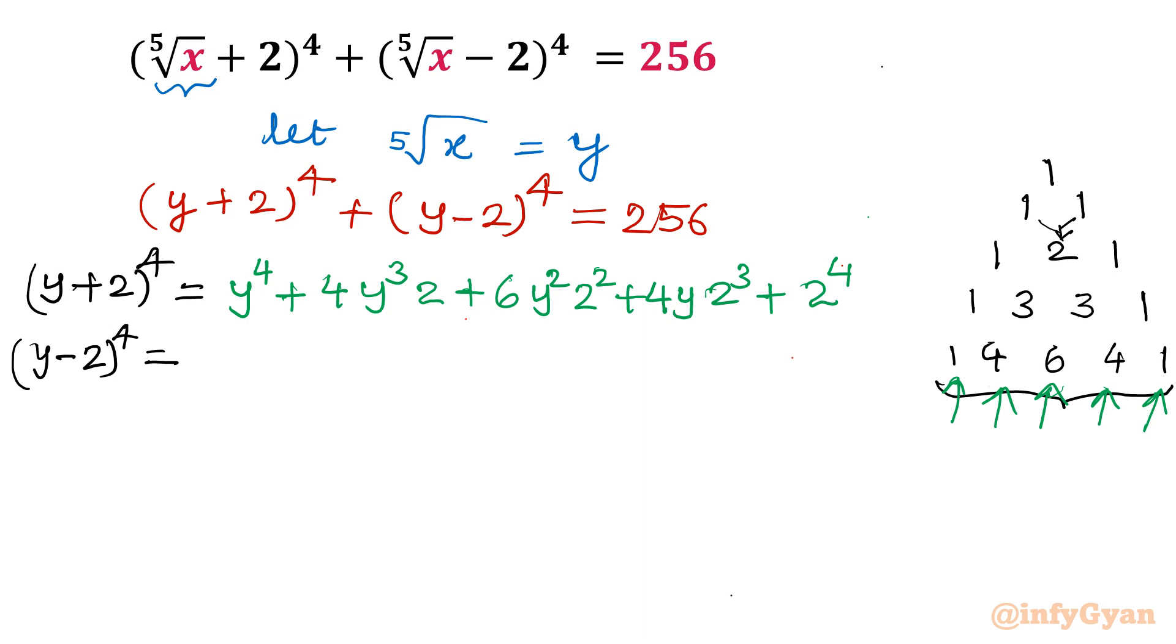Now y minus 2: in place of 2 we have to write minus 2. So it will become y power 4 minus 4y cube times 2 plus 6 y square 2 square minus 4y times 2 cube plus 2 power 4. Now simply add both the equations. Once I will add, see the alternate terms will get cancelled out.